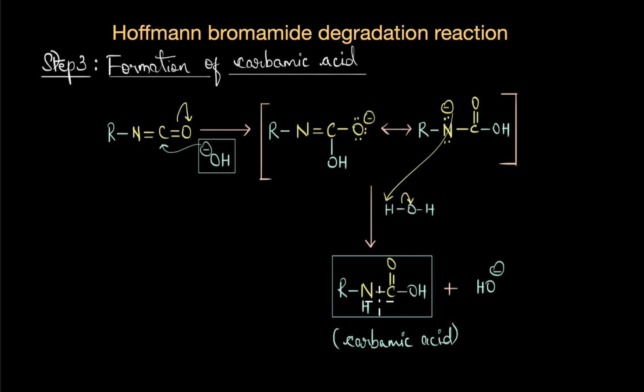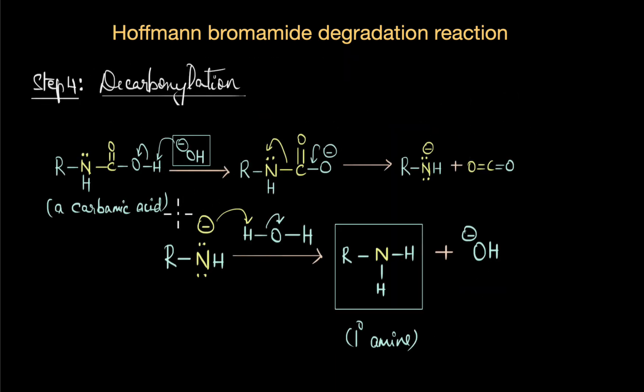Carbamic acids are highly unstable. It almost spontaneously breaks down and loses a carbon dioxide molecule, giving us RNH- which takes up a proton from the medium and gives us a primary amine as the final product. This is broadly what happens in Hoffmann bromamide degradation reaction.